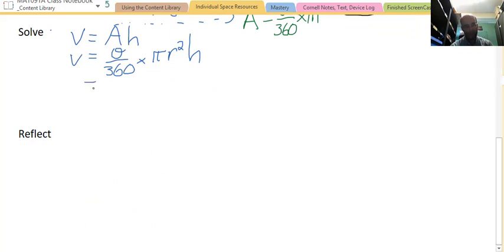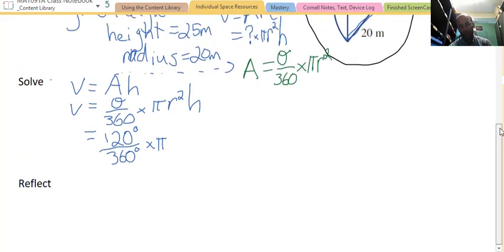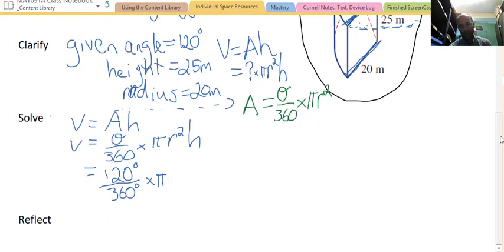Now that we have the rules written down, we can look at substituting in. So we have 120 degrees, is the given angle, over 360 degrees, times π, times the radius. Now the radius, remember, was just up here, it was 20, and the height was 25. So, times 20 squared, times the height, 25.